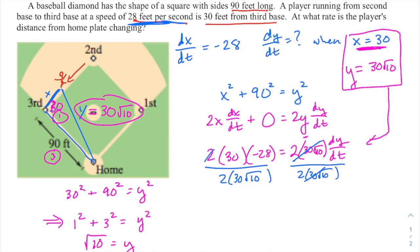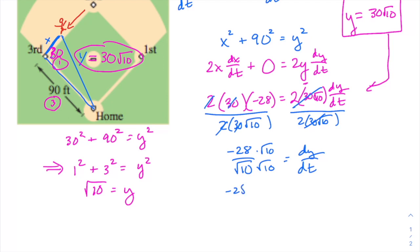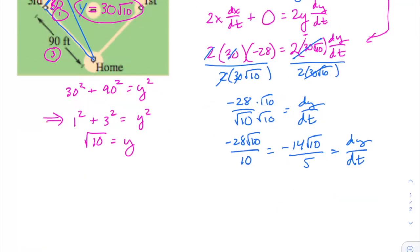So kind of nice: 2 cancels, 30 cancels, you're left with negative 28 over root 10. And we'll rationalize that by multiplying top and bottom by root 10, and you'll get negative 28 root 10 over 10, which then further reduces to negative 14 root 10 over 5. That's what dy/dt is.